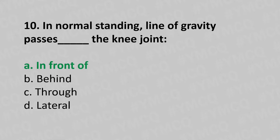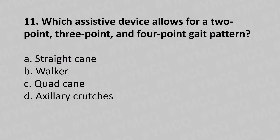Eleventh question: which assistive device allows for a two-point, three-point, and four-point gait pattern? Option A: straight cane, option B: walker, option C: quad cane, option D: axillary crutches. The answer is option D: axillary crutches.